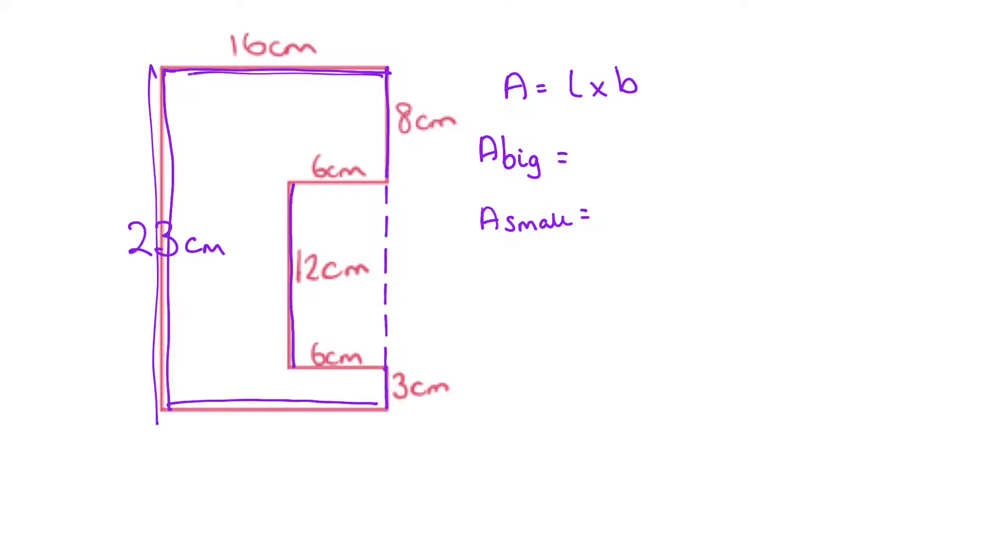So the area of the big rectangle is 23 times 16, and we're going to look at how to work that out in a second, and then the area of the smaller rectangle is going to be 12 by 6. So hopefully you know your 12 times table, so 12 sixes are 72. We need to work out this 23 times 16, though. I would suggest that we work out 23 times 10 and 23 times 6, and then add them together. So 23 times 10 is 230, 23 times 6, so 3 sixes are 18, 2 sixes are 12, add the 1, makes 13.